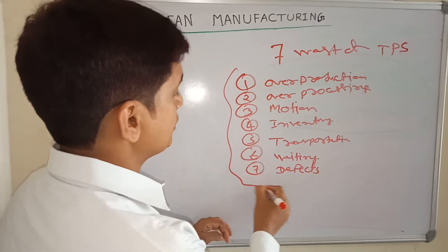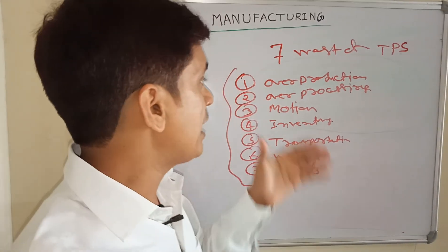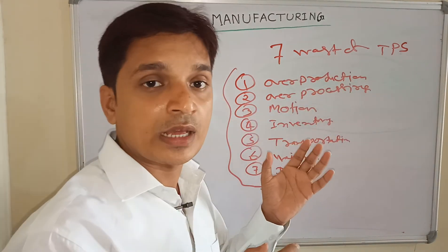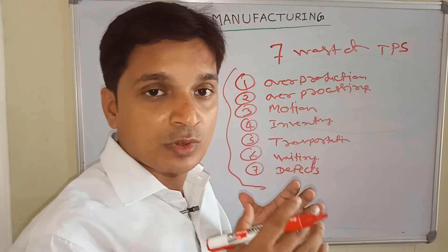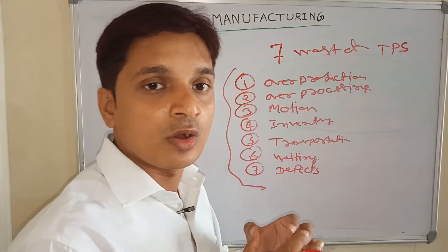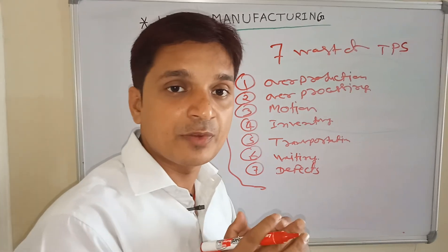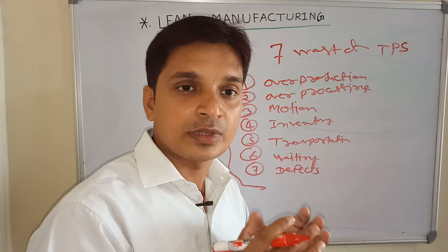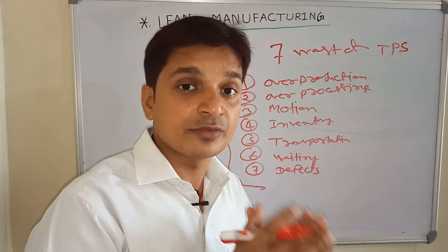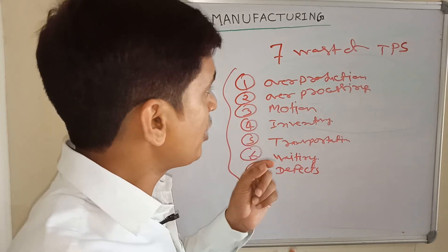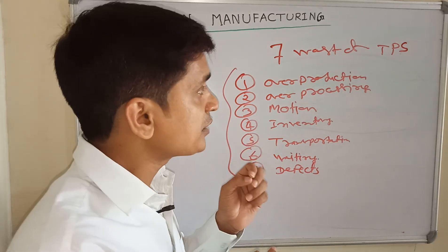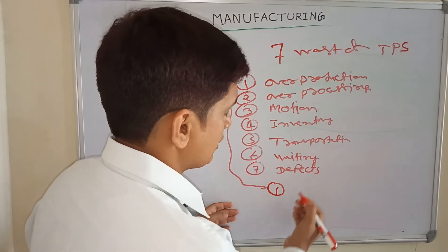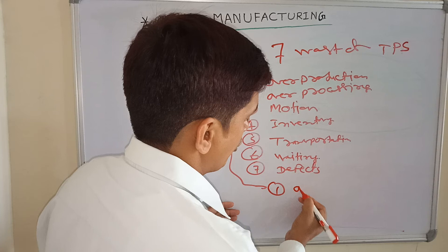These are the seven wastes of TPS. If you control and eliminate all of these wastes, your process will be very robust and you can work towards lean manufacturing. Your organization will be profitable and you will work on value-added activities and your customers will be satisfied. There is one additional waste not included in TPS but included in the lean manufacturing council — that is overman power, or excess manpower.